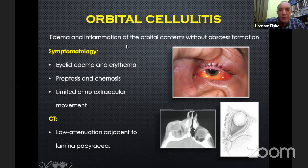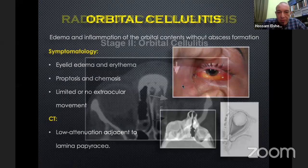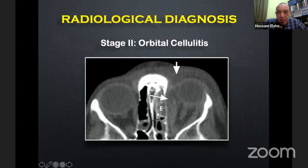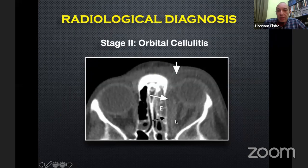Orbital cellulitis is edema and inflammation of the orbital contents without abscess formation. Clinically: eyelid edema and erythema, proptosis and chemosis, limited or no extraocular movement. On axial CT scan, you can see that both the preseptal and postseptal fat are infiltrated — preseptal and postseptal involvement together means orbital cellulitis.